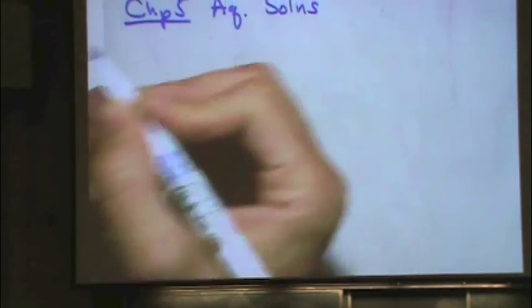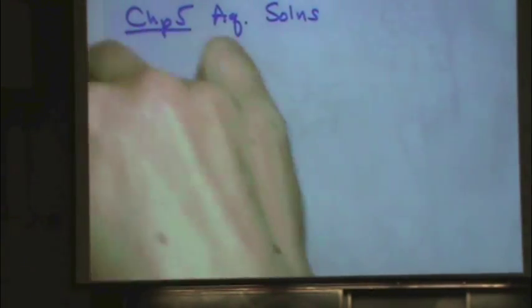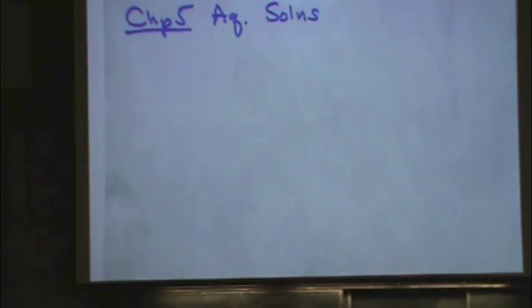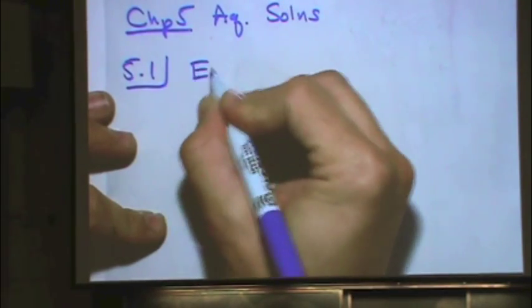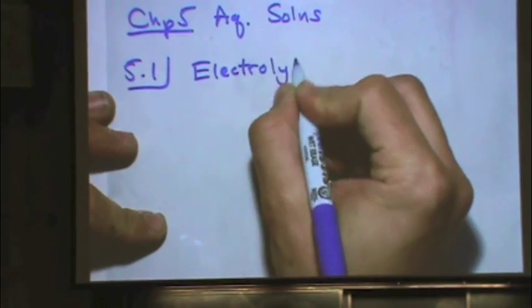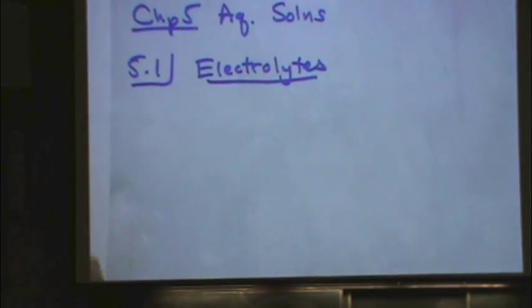So beginning of chapter 5 here, aqueous solutions. Solutions that are in water. And specifically the reactions in aqueous solutions. And we're going to start off 5.1 with electrolytes. Electrolytes have the ability to ionize. So if you're a compound and you can ionize into a cation and an anion, you are an electrolyte. It forms ions.